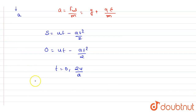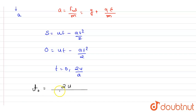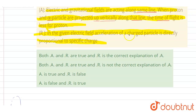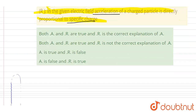So the time of flight will be 2u/a, where a is g plus eq/m. It depends on the specific charge q/m. The acceleration is directly proportional to the specific charge, and the time of flight is inversely related with the acceleration.